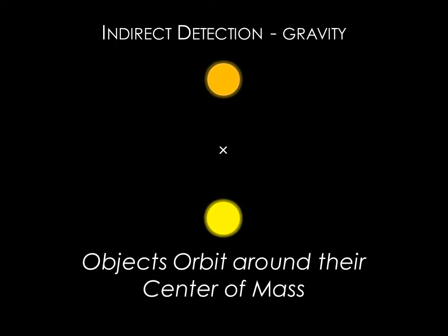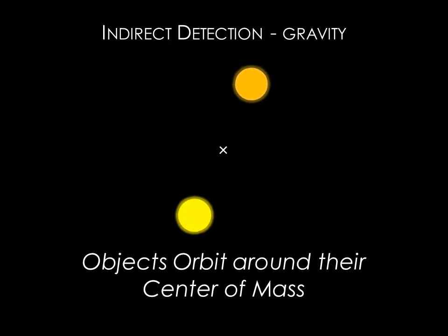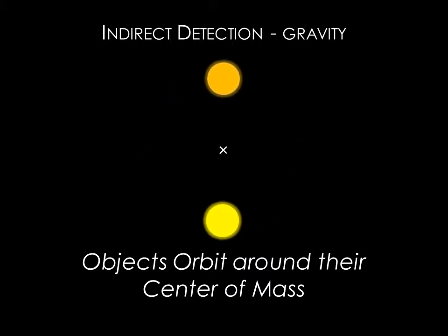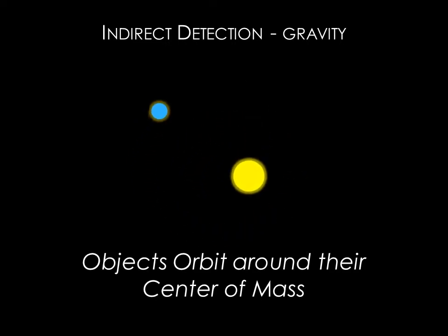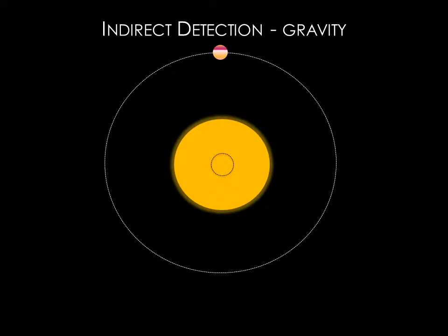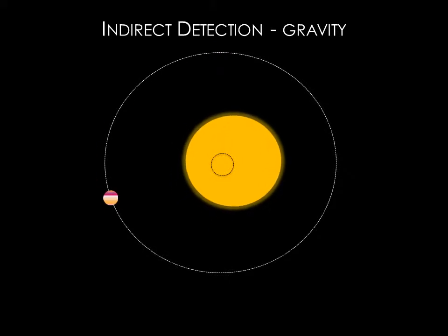We usually think of one object orbiting another, like the Earth orbiting the Sun. But objects attracted by gravity actually both orbit around their common center of mass. For example, in a binary star system where both stars have the same mass, we would see the stars orbiting around a point halfway between them. When one object is more massive than the other, the center of mass lies closer to the more massive object.